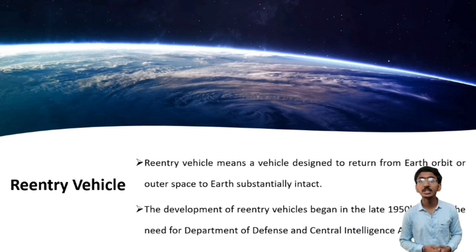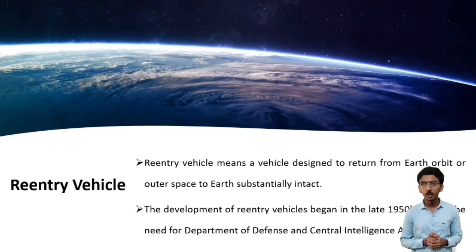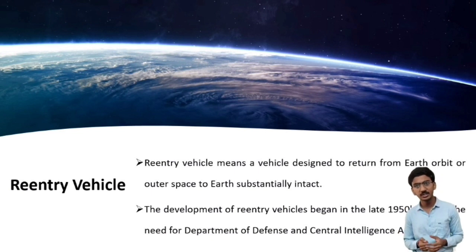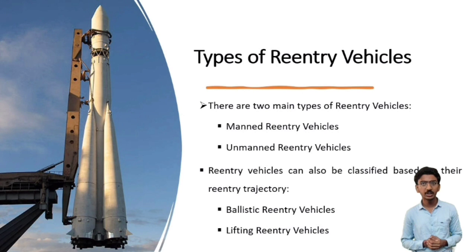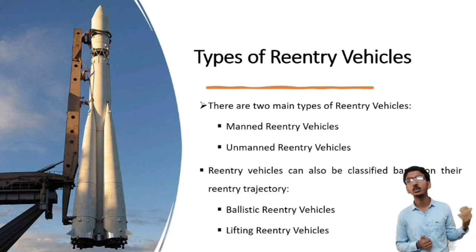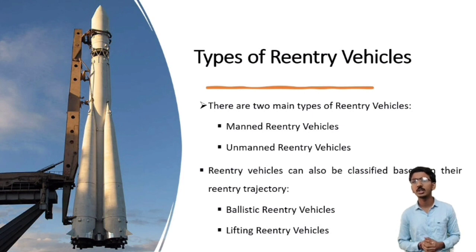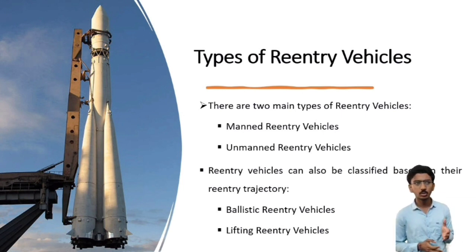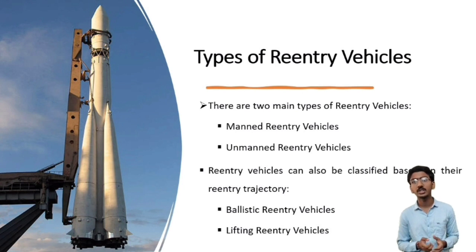Reentry Vehicles means a vehicle designed to return from earth orbit or outer space to earth substantially intact. The development of reentry vehicles began in the late 1950s due to the need of the Department of Defense and Central Intelligence Agency. There are mainly two types: Manned Reentry Vehicles, designed to carry human crews and return them safely to earth — examples are NASA space shuttle, the Russian Soyuz spacecraft and the Chinese spacecraft — and Unmanned Reentry Vehicles, designed to deliver cargo, scientific experiments or other payloads to earth, like SpaceX, the Dragon spacecraft and the Russian Progress spacecraft.